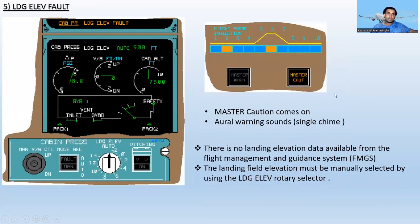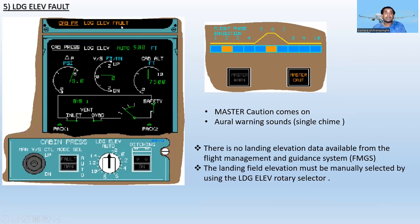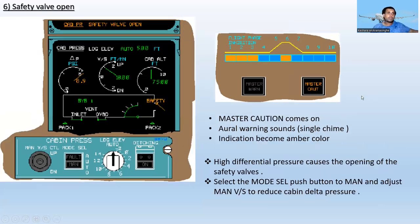The flight phases for the outflow valve fault are one, two, nine, and ten. Next is Landing Elevation Fault. The master caution comes on in amber and the oral warning sounds as a single chime, applicable in flight phases two and six. This means no landing elevation data is available from the Flight Management and Guidance System, so the landing field elevation must be manually selected using the landing elevation rotary selector on the cabin pressure control panel. The fault message is 'Cabin Pressure Landing Elevation Fault.'